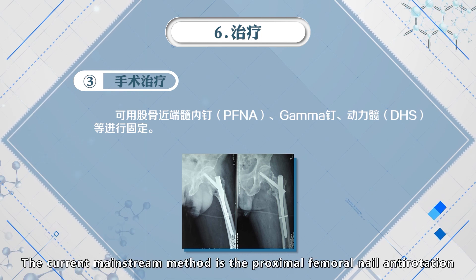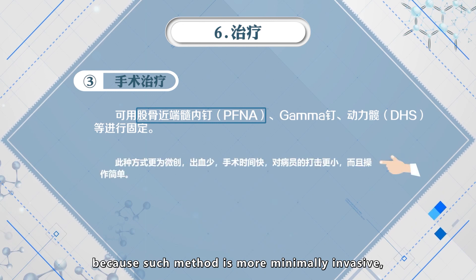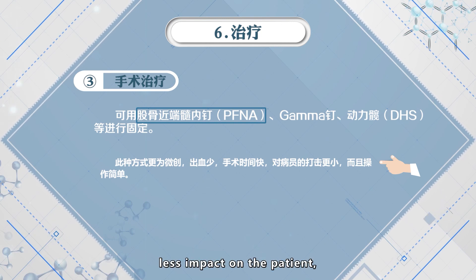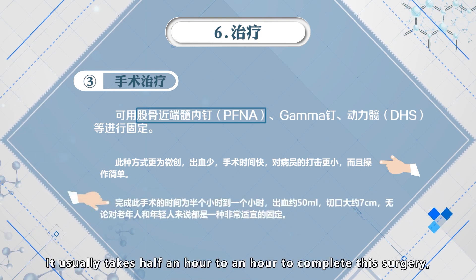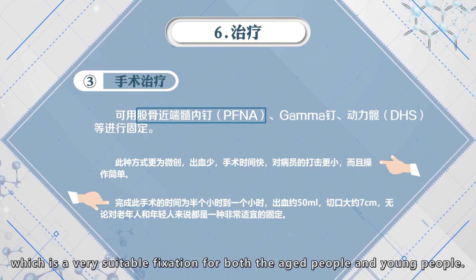The current mainstream method is the proximal femoral nail anti-rotation (PFNA), because this method is more minimally invasive, with less bleeding, faster operation time, less impact on the patient, and simple operation. It usually takes half an hour to an hour to complete this surgery, with bleeding of about 50 ml and an incision of about 7 cm, which is very suitable for both aged and young people.